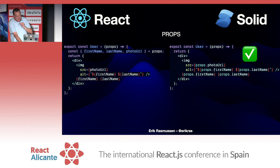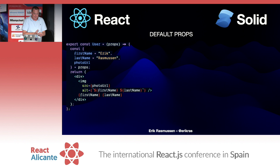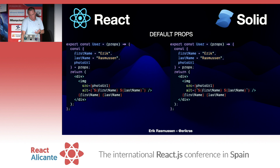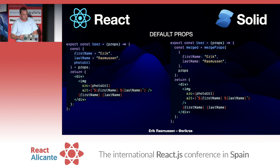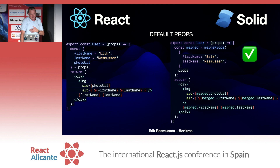However, in modern React, the way we define default values for props is in the destructuring. So what can we do in Solid? Solid provides a special function called mergeProps that maintains their signal-ness. And then you can just use that object for your JSX.